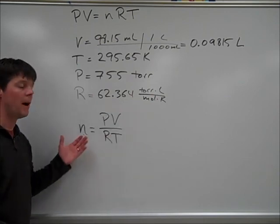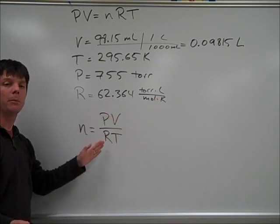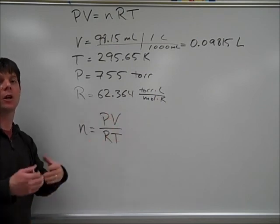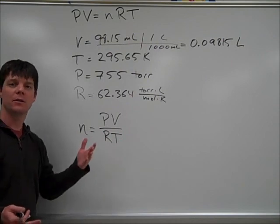So, we'd solve to find the value for n. It was going to be the pressure multiplied by the volume divided by the R constant multiplied by the temperature. Now, we can go ahead and substitute in our known values and solve.